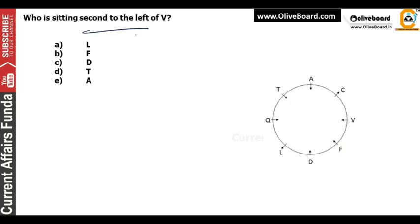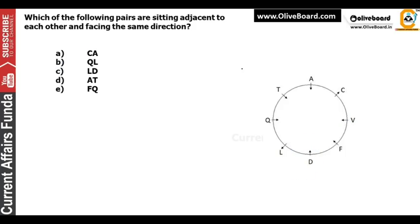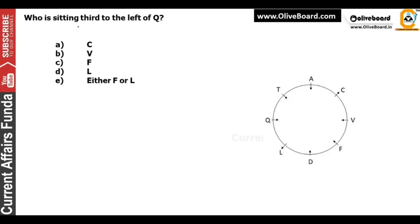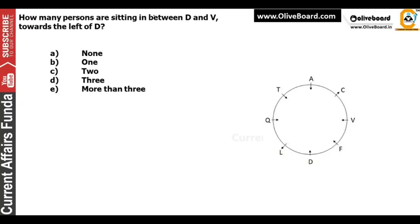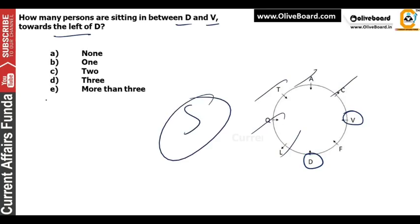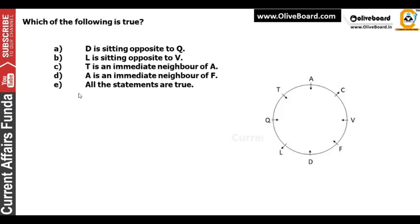So the first question: who is sitting second to the left of V? V is second to the left — D, option number C is the correct answer. Option number A is the correct answer for how many persons are sitting between D and V towards the left of D: 1, 2, 3, 4, 5 — more than 3. Which of the following is true? D is sitting opposite to Q — no, not true. L is sitting opposite to V — no. T is immediate neighbor of A — yes, this is correct. Option C is the correct answer.